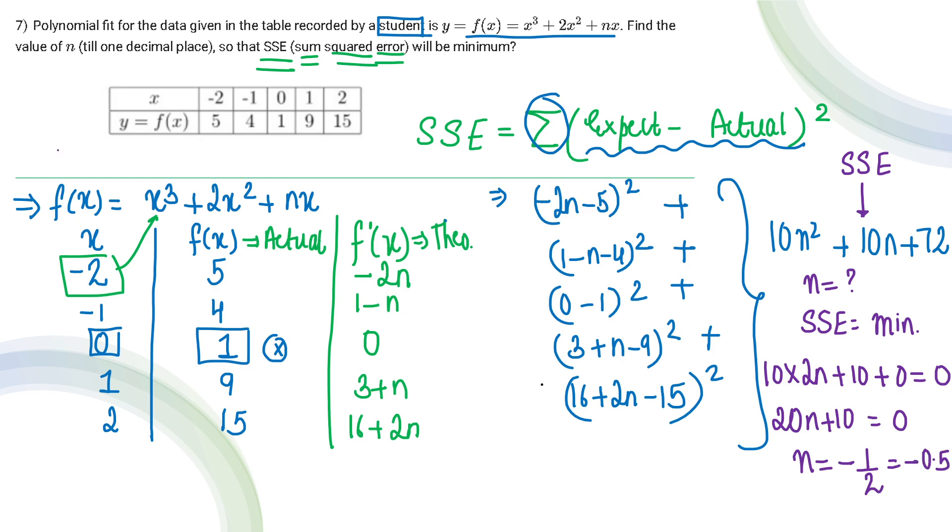So our final answer is -0.5. And we have to give the value till one decimal place only. So that's all on this question. If you understood the solution, then don't forget to subscribe to the channel.